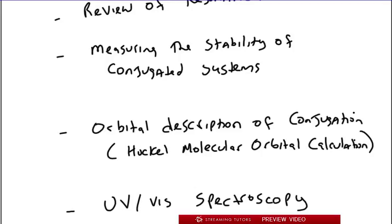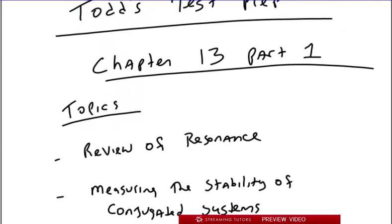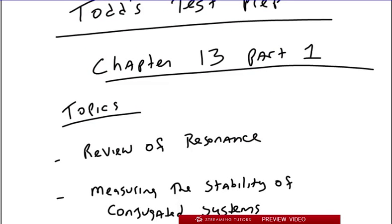And then finally, we're going to follow up at the end of this one, this part one, by going over UV visible spectroscopy and going over some of that philosophy and how it applies to conjugated systems. So this chapter is all about conjugated systems, and so that's a good place for us to begin.